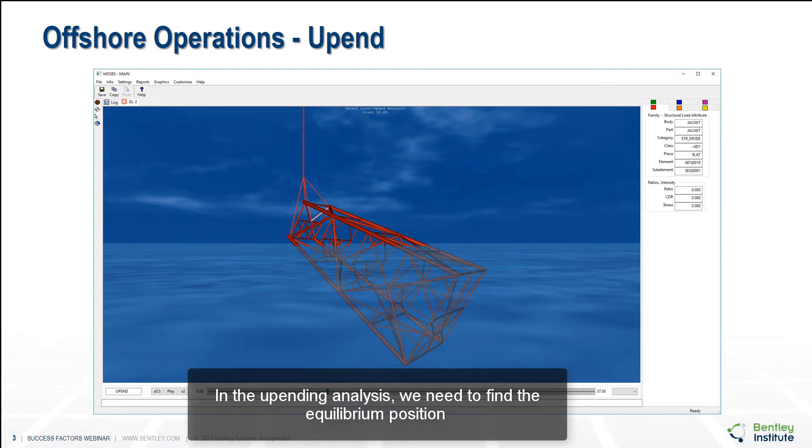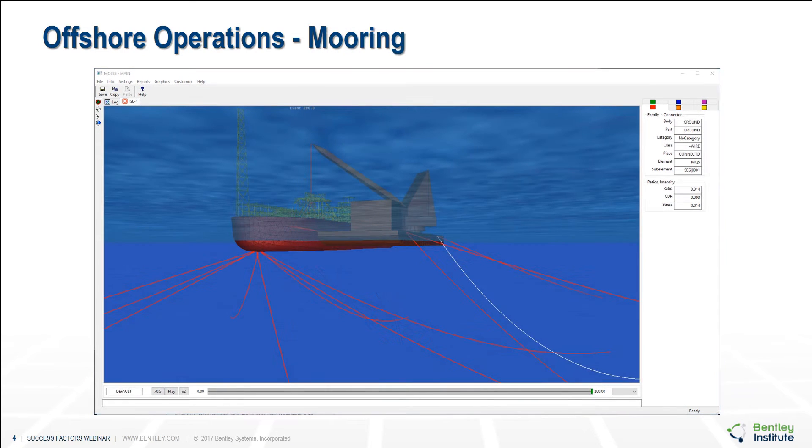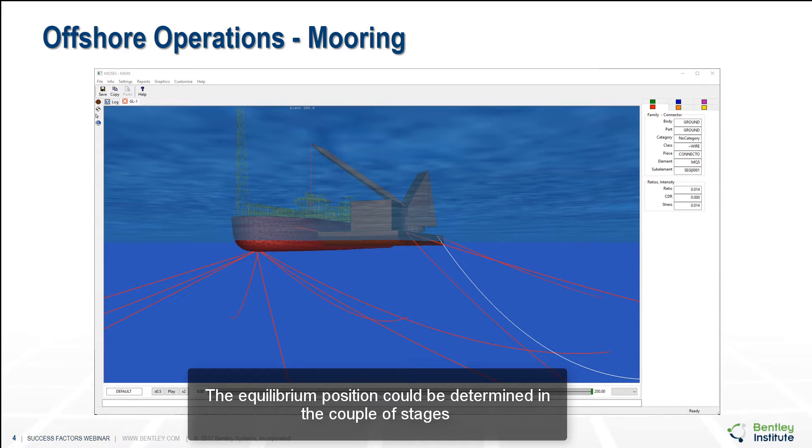In the appending analysis, we need to find the equilibrium position when the jacket condition has been moved. MOSES will find the equilibrium position by iteration until either the residual is less than the tolerances or until the default maximum iterations are taken. The equilibrium position could be determined in a couple of stages such as based on iterative procedure or considering separately the equilibrium condition of vertical forces, transverse moments and longitudinal moments.